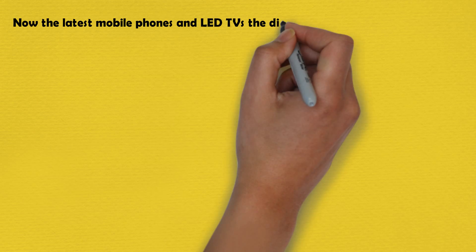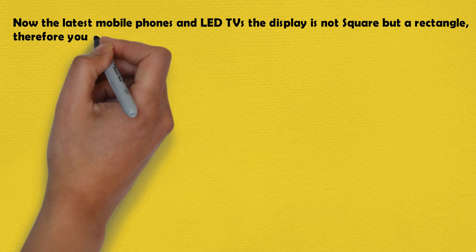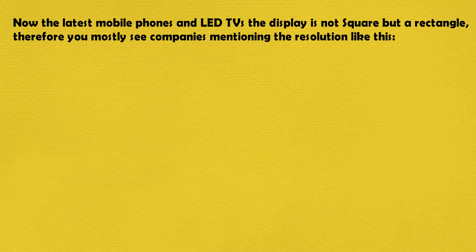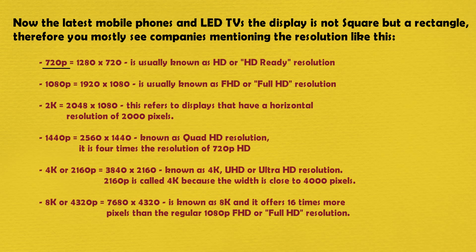Now with the latest mobile phones and LED TVs, the display is not square but a rectangle. Therefore you mostly see companies mentioning the resolution like this: 720p or HD ready, 1080p or better known as Full HD, 2K which is close to 1080p, 1440p which is better known as Quad HD or QHD, 4K or better known as UHD or ultra high definition resolution, and then the gorgeous 8K resolution which is 16 times that of 1080p or Full HD, currently the most expensive resolution screens made by Samsung and LG.